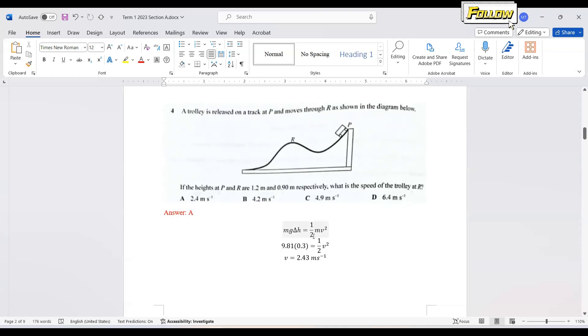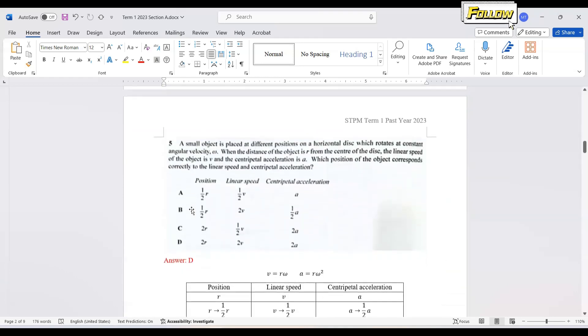We have a change in potential energy, which is converted to kinetic energy. Just apply the formula mg delta h equal to half mv squared. The change in height is from 1.2 to 0.9, so the change in height is 0.3. And g we have 9.81. Just cancel the m here and apply this formula. You should be able to obtain the velocity is 2.43, which is answer A.